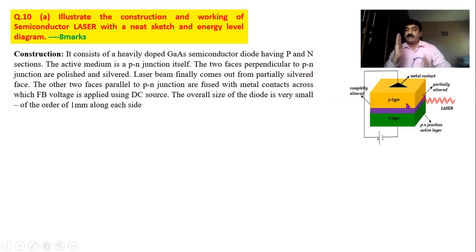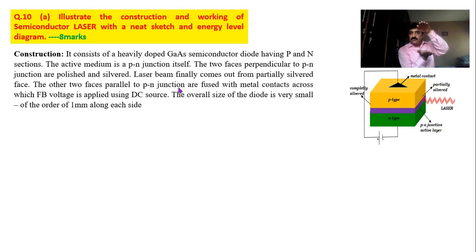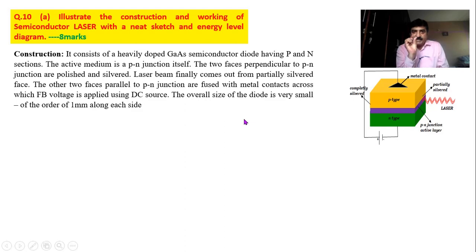The two faces perpendicular to the p-n junction are polished and silvered; the laser beam finally comes out from the partially silvered face. The other two faces parallel to the p-n junction — top and bottom — are fused with metal contacts across which a forward bias voltage is applied using a DC source. The overall size of the diode is very small, less than one millimeter.